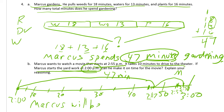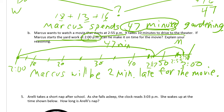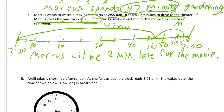Marcus will be 2 minutes late for the movie. In real life he'll probably just be walking in during the ads or previews, so he won't miss any of the actual movie. But he's going to be 2 minutes late for when it says the movie starts. Our explanation is the number line timeline.